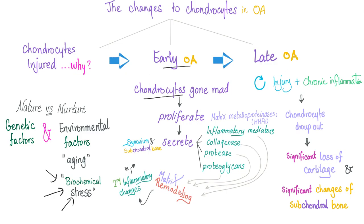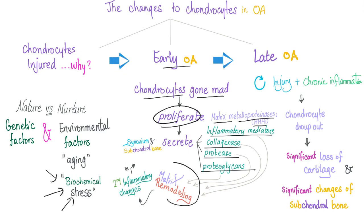In early osteoarthritis, chondrocytes go mad. They proliferate, secreting matrix metalloproteinases (MMPs), inflammatory mediators, collagenase, proteases, proteoglycans, and causing matrix remodeling. This leads to secondary inflammatory changes in the synovium and the subchondral bone.